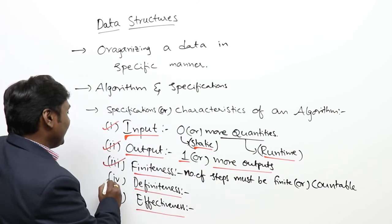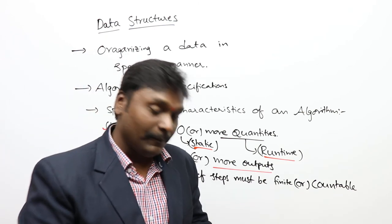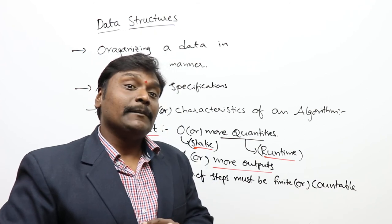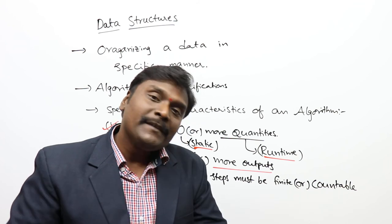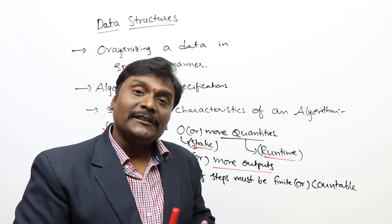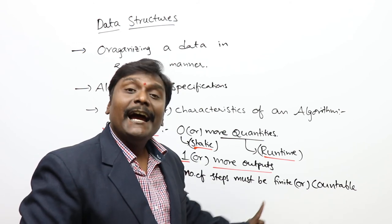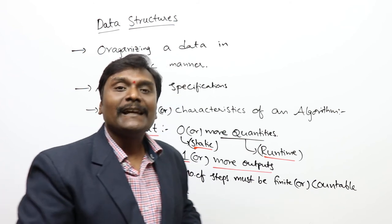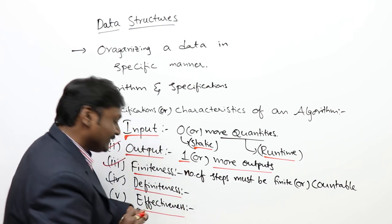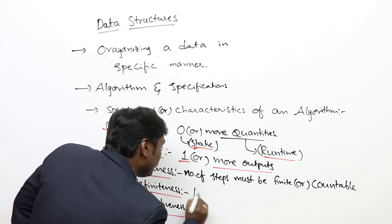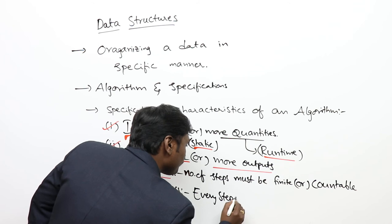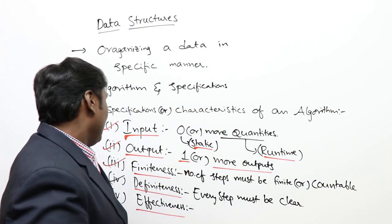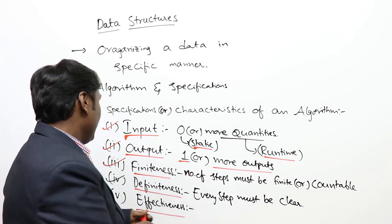Next is definiteness. Whenever we apply a set of steps, the steps must be unambiguous — without confusion. Every algorithm must have steps that are finite and unambiguous, meaning without ambiguity. Every step must be clear and unambiguous. We can say: every step of an algorithm must be clear.